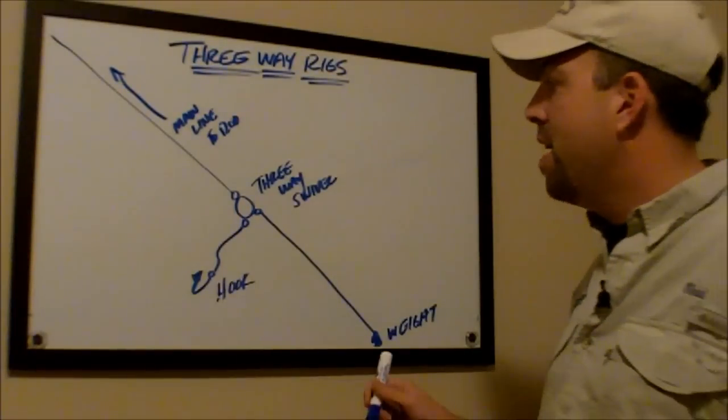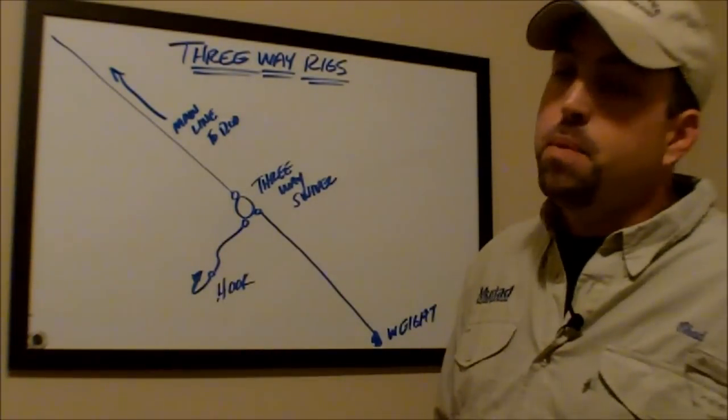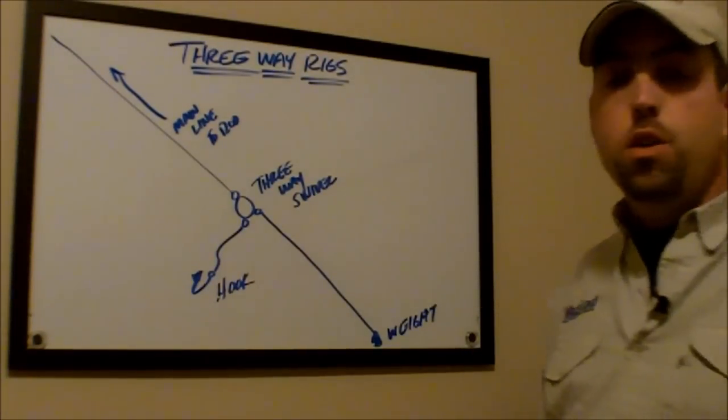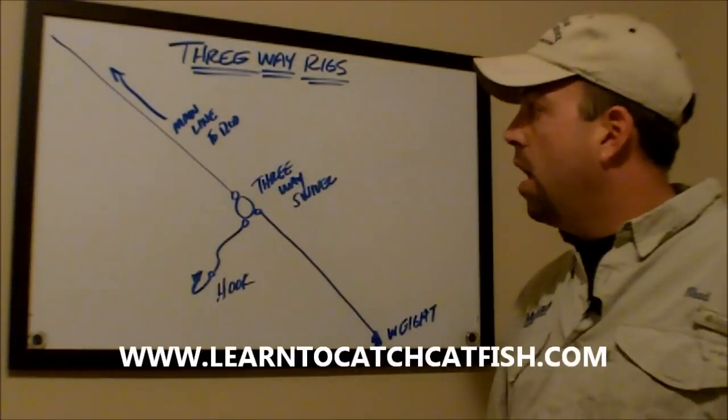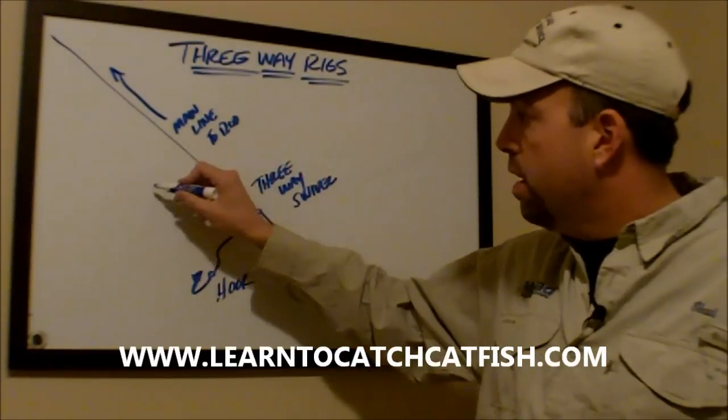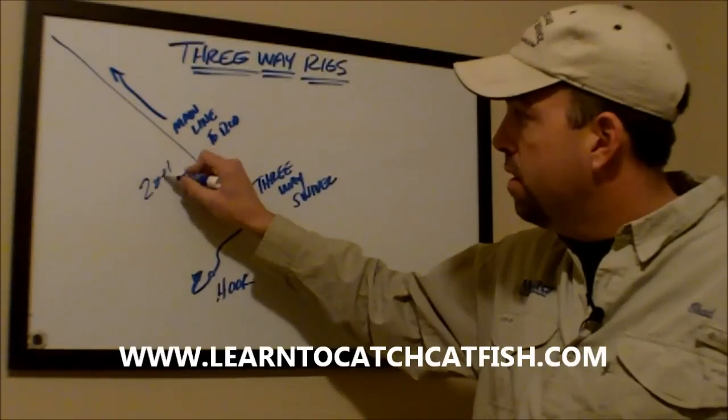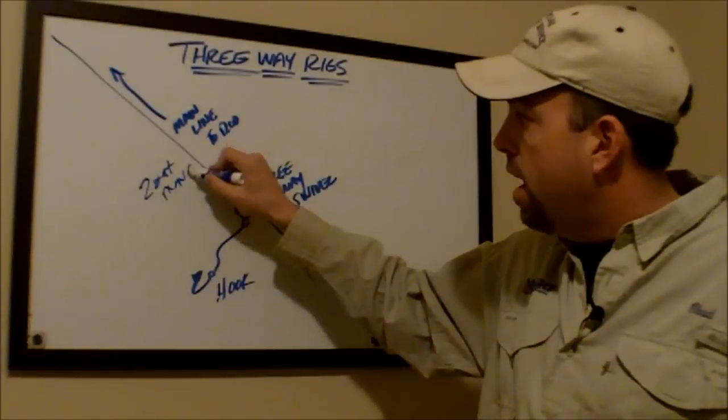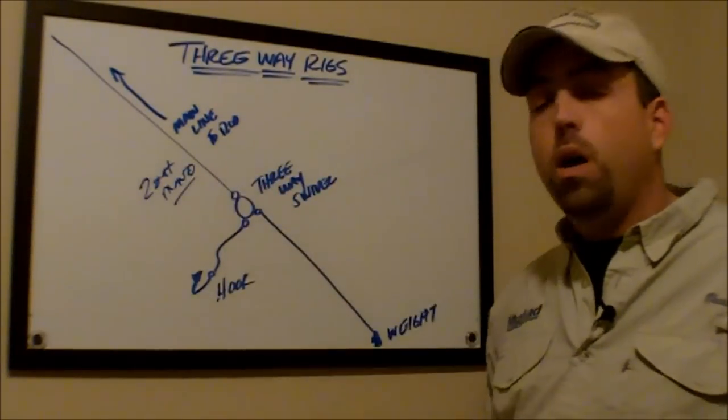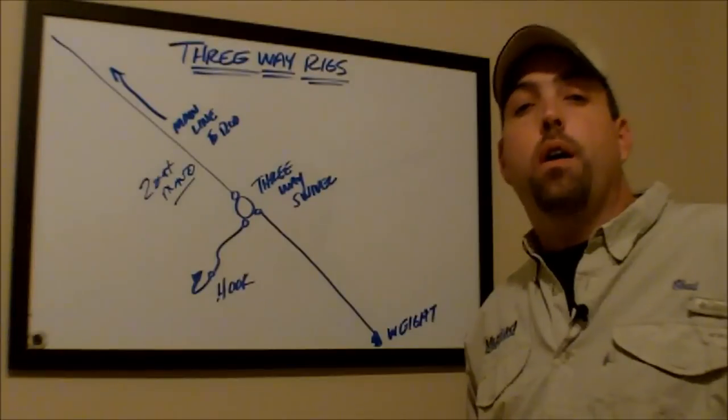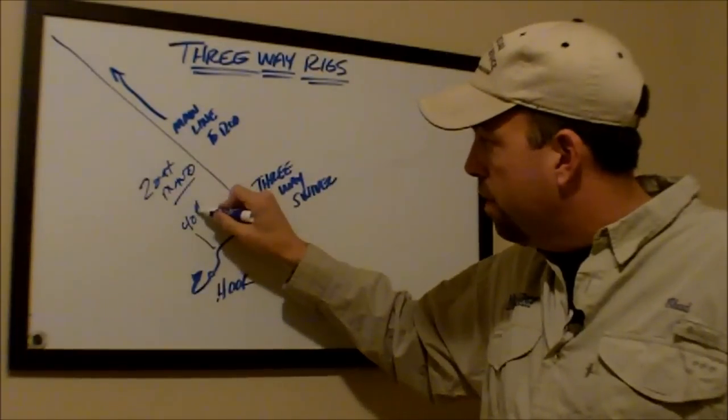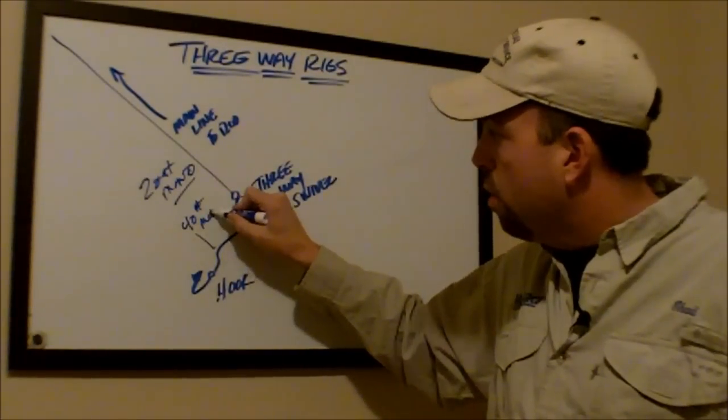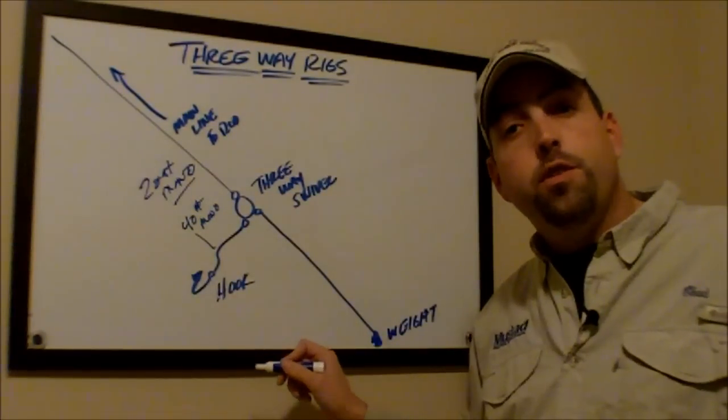The other question I've had is also been a lot about what kind of line should I use for this type of rig? Obviously, your main line is going to be whatever you use. I recommend 20-pound mono. I use Bass Pro Offshore Angler or Andy Monofilament. For your leader, you're going to want 40-pound mono or 50-pound monofilament for your leader.